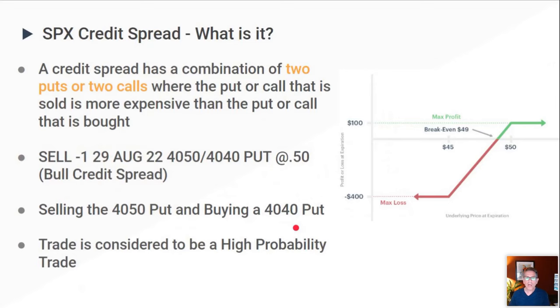The trade is considered a high probability trade because you don't have to get the direction exactly right. It's based on a range, and as long as that range is not breached, you'll make money.